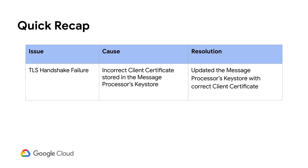To summarize, we saw TLS handshake failures caused due to an incorrect client certificate stored in the key store. We resolved the issue by ensuring that we have a valid client certificate in the message processor key store. Beware: the response code for API requests can either be 503 service unavailable, 400 bad request, or something else when a backend service detects an issue with certificates during TLS handshake. The response code and error message are purely dependent on the backend service implementation in these kinds of cases.